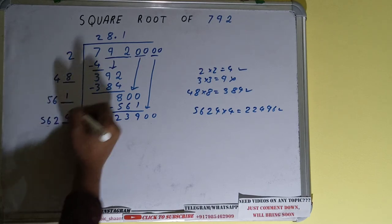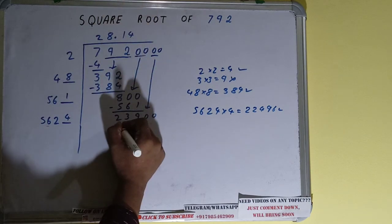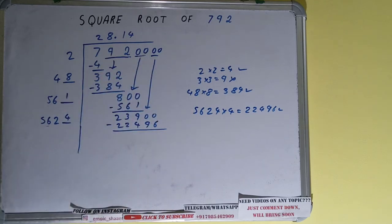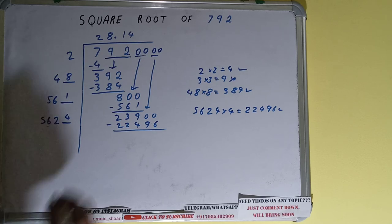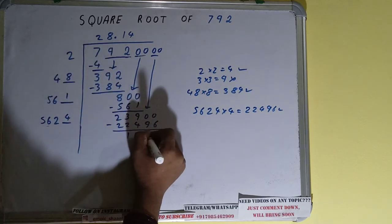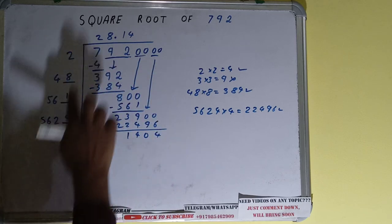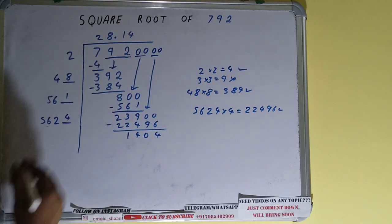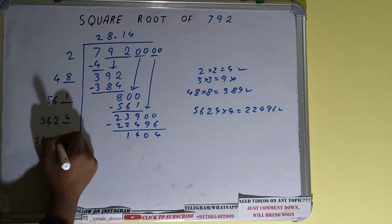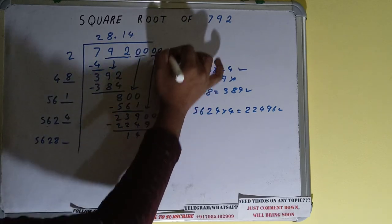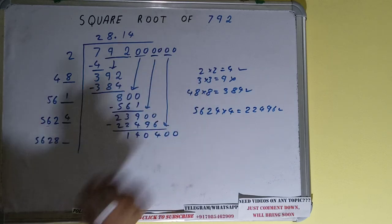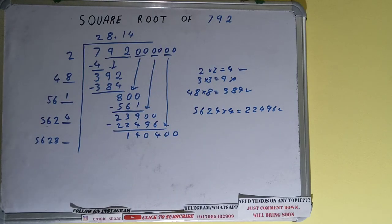So 4 here and 4 here. 22,496, subtract it and it will be 1404. Now 5624 into 4 with it, so add both. 5624 plus 4 will be 5628 and one digit extra. We need to make this number big, so bring the next pair of zeros down and it will become 140,400.